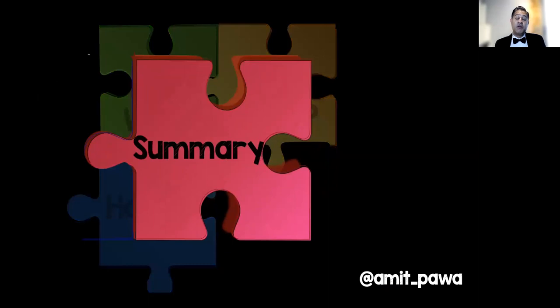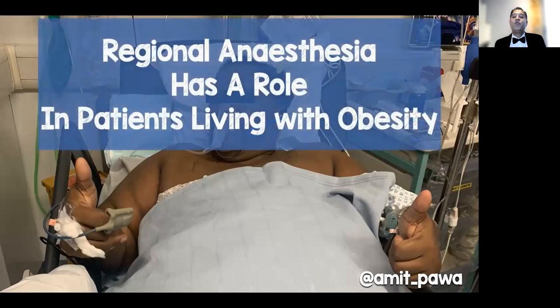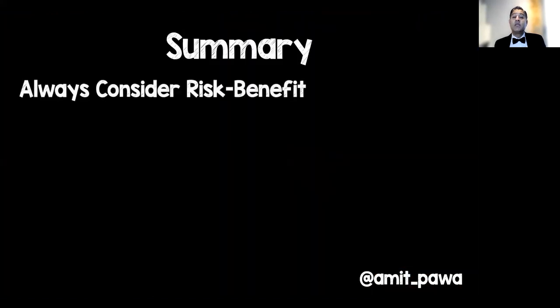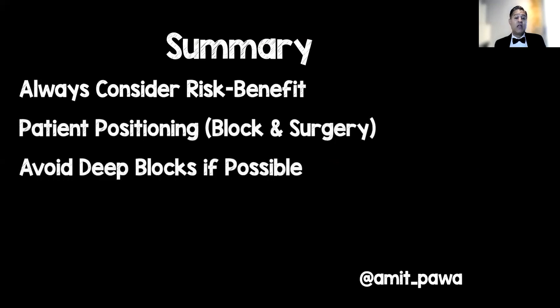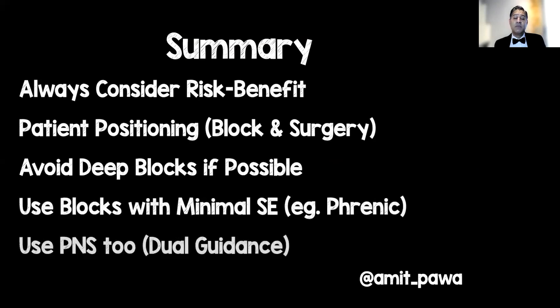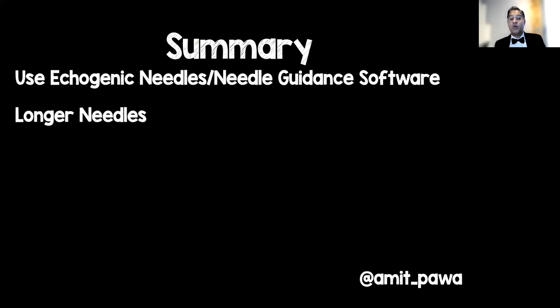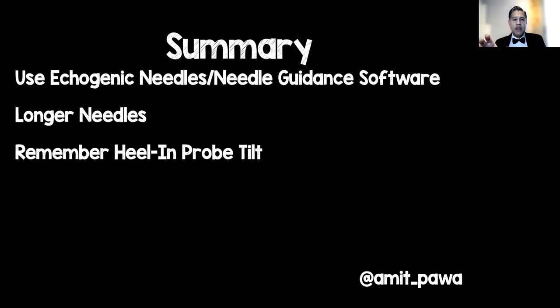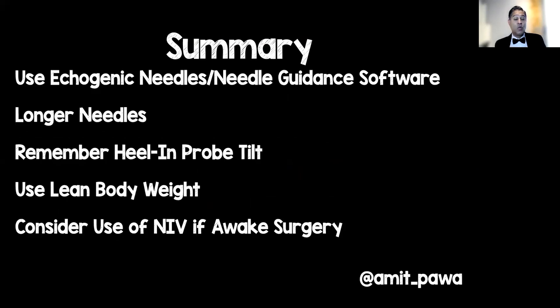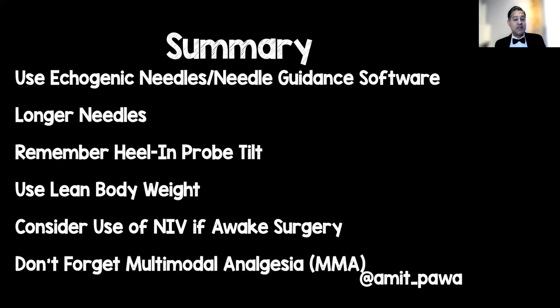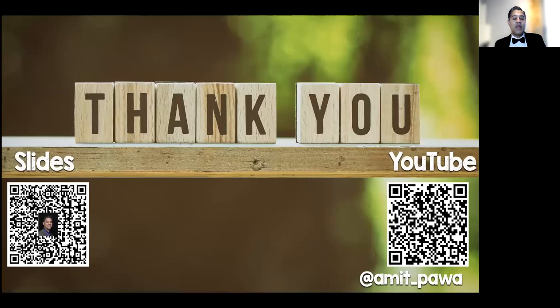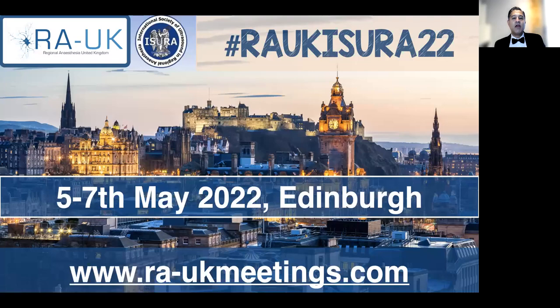In summary: regional anaesthesia has a role in patients living with obesity. Always consider the risk-benefit balance, think about positioning for both block and surgery, avoid deep blocks if possible, and favour blocks with minimal side effects. Use dual guidance — peripheral nerve stimulator plus ultrasound — echogenic needles or needle guidance software, longer needles, and the heel-in probe tilt manoeuvre. Use lean body weight for drug doses. Consider non-invasive ventilation for awake surgery, and don't forget multimodal analgesia. Slides are available via QR code, and the video will be on my YouTube channel. Thank you very much.